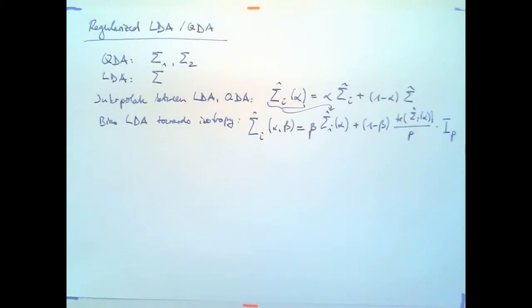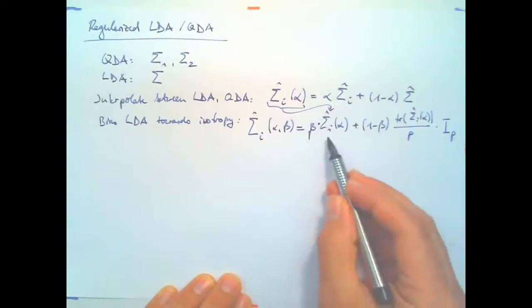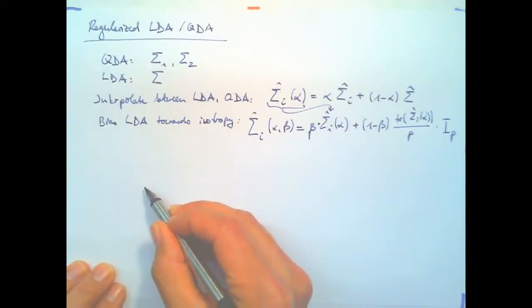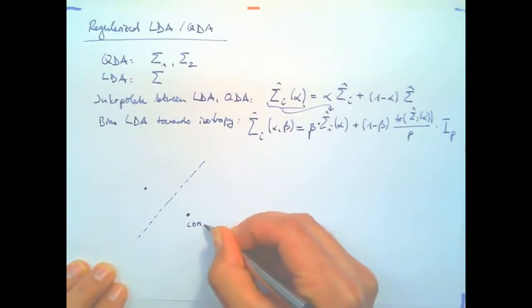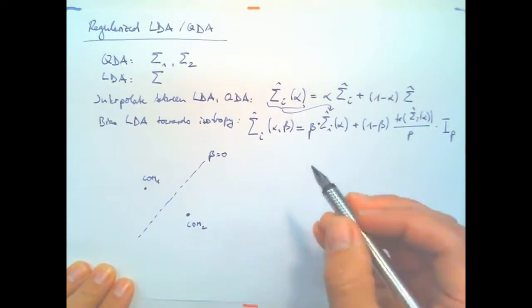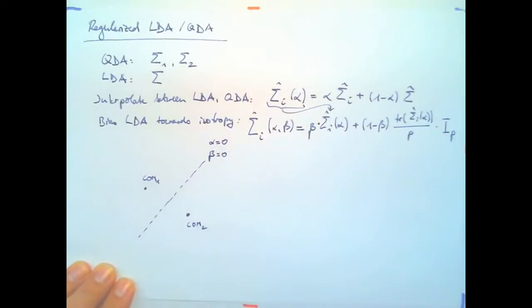So overall, we get a mixture of beta times this LDA QDA matrix, plus 1 minus beta times the identity matrix. And well, what's the effect? If we did set beta to zero, we would obtain simply a decision surface that runs right through the center of masses of the two classes. So this would be center of mass of class two and center of mass of class one. And this is the solution which we would get for beta zero and alpha zero. This very primitive classifier is also called the closest mean classifier.